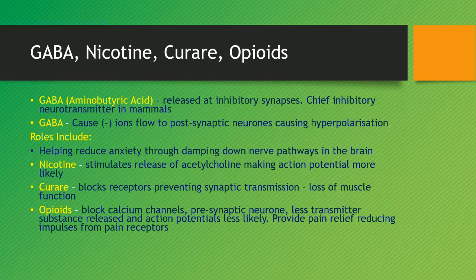Specific examples include: GABA (gamma-aminobutyric acid), which is released at inhibitory synapses and is the chief inhibitory neurotransmitter in mammals — it causes an inflow of negative ions to post-synaptic neurons causing hyperpolarization, and helps reduce anxiety by dampening nerve pathways in the brain. Nicotine stimulates acetylcholine receptors, making more action potentials likely. Curare blocks receptors, preventing synaptic transmission and leading to loss of muscle function. Opioids block calcium channels in the pre-synaptic neuron, meaning less neurotransmitter is released and action potentials become less likely — this provides pain relief by reducing impulses from pain receptors.